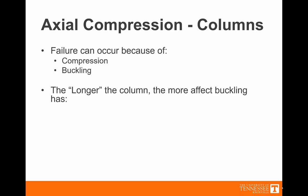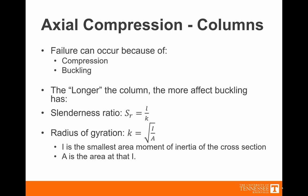In order to decide what we mean by the word long, we're going to establish a slenderness ratio. That's the length divided by a radius of gyration, which is K. The radius of gyration is related to I, the moment of inertia of the cross section. That's the smallest area moment of inertia of the cross section.